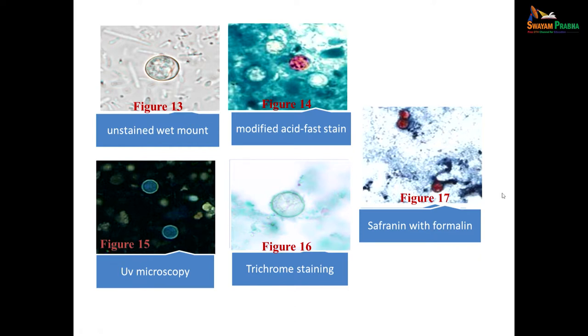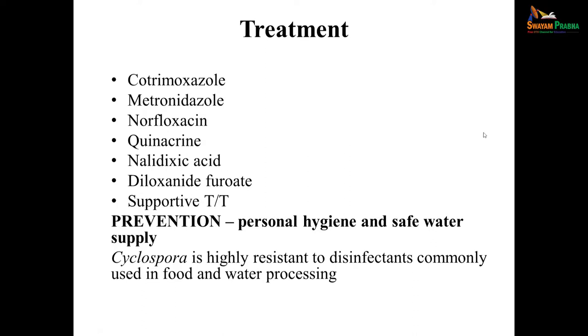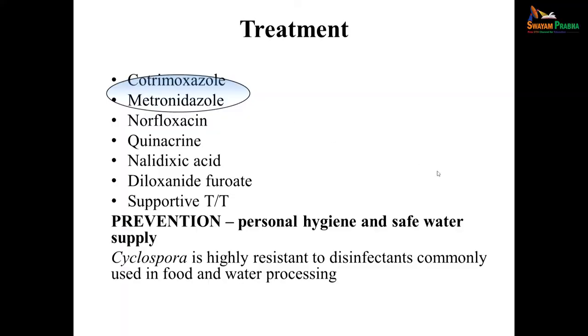Under UV microscopy, trichrome staining or safranin with formalin can also be done, showing red-colored structures. Comparing Cryptosporidium parvum with Cyclospora: Cryptosporidium is smaller and Cyclospora is bigger. Treatment is with co-trimoxazole; metronidazole, norfloxacin, quinacrine, or nalidixic acid can also be given, in addition to supportive treatment for dehydration. Prevention requires personal hygiene and safe water supply, as Cyclospora is highly resistant to disinfectants commonly used in food and water processing. The main treatment remains co-trimoxazole and metronidazole.